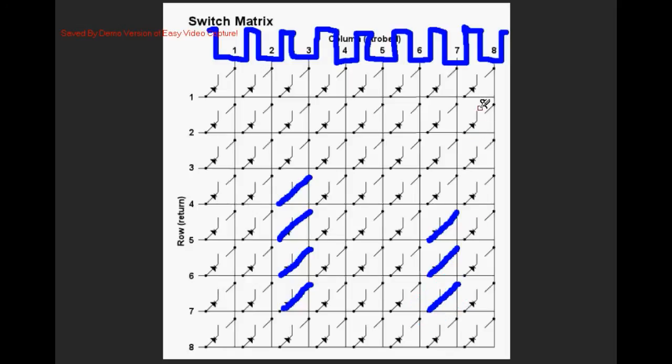And then in switch diagnostics we'll manually close a switch. In this case when we close the switch we get a false indication that the switch in column three row two was also closed.